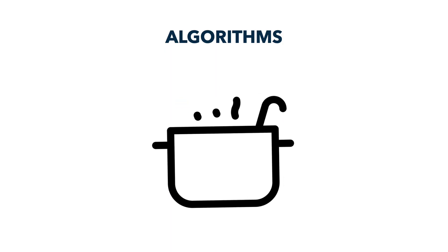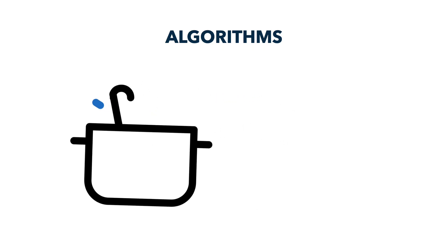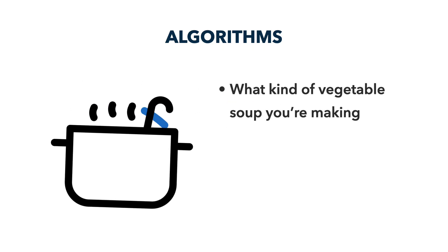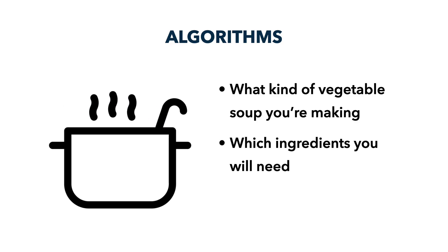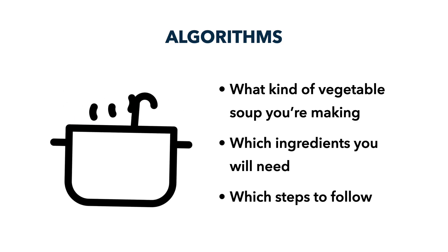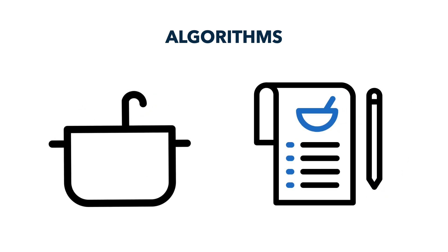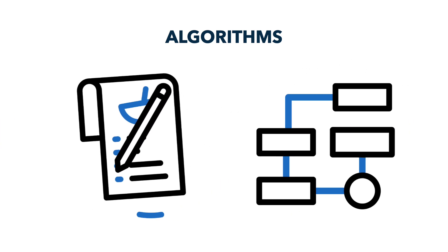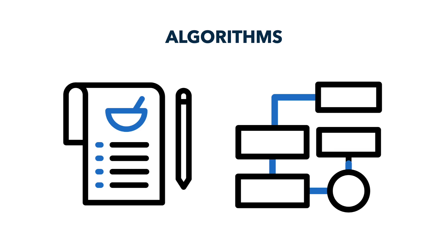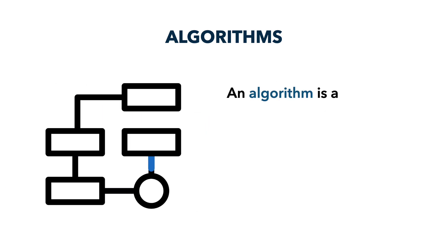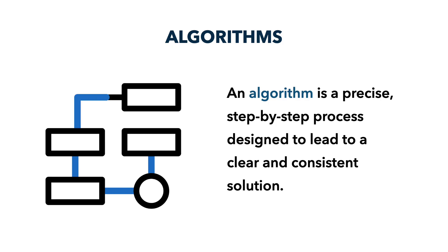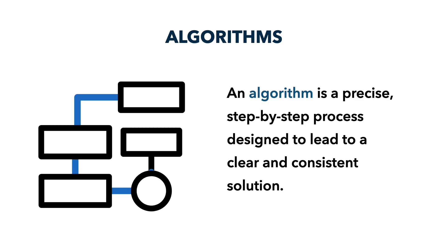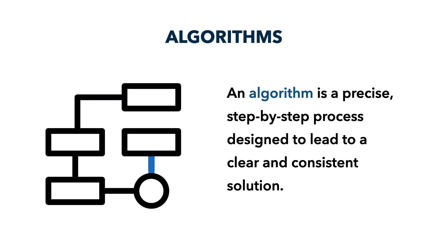Imagine you've been asked to make vegetable soup. You'll likely want to know exactly what kind of vegetable soup you're making, which ingredients you will need, and which steps to follow in order to make it. Following a recipe for vegetable soup isn't so different from how an algorithm works. An algorithm is a precise, step-by-step process designed to lead to a clear and consistent solution, much like how precisely following a step-by-step recipe for vegetable soup will result in the same dish every time.